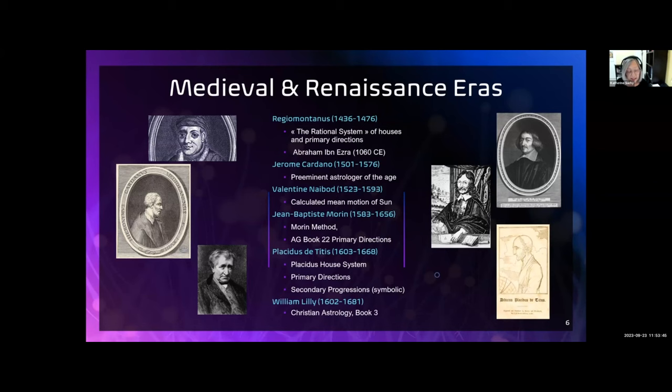Cardan's astrological treatise and interpretations of Ptolemy's work were the principal reference books for astrologers of that era. Nabod is most known today for calculating the mean motion of the sun, giving the value of 59 minutes and 8 seconds. Jean-Baptiste Moran was a French astrologer, mathematician, and physician in the court of Louis XIII, and he was present at the birth of Louis XIV.